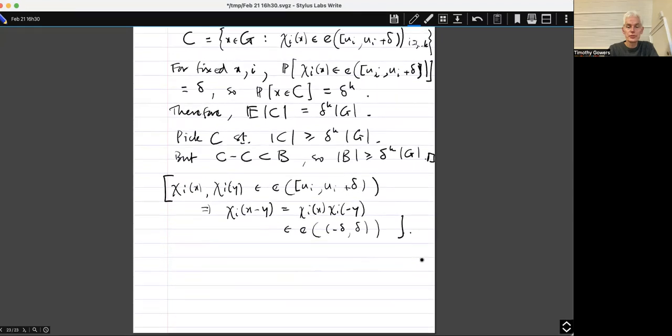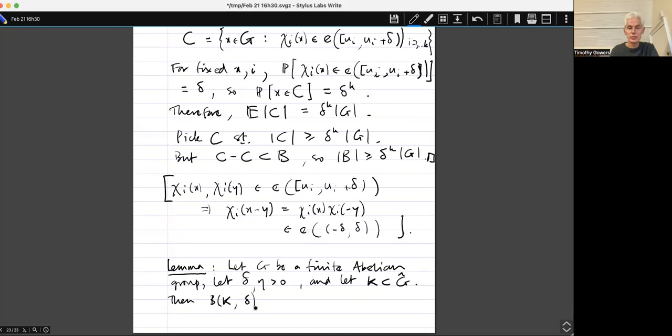Okay next thing I want to prove is just a really simple lemma, but it comes in handy from time to time. Let G be a finite abelian group. Let delta greater than zero, delta and E to be greater than zero. And let K be some subset of G hat, another subset of characters.